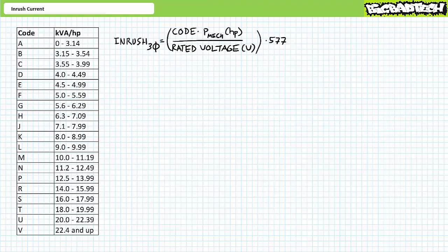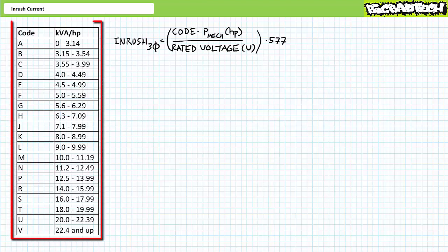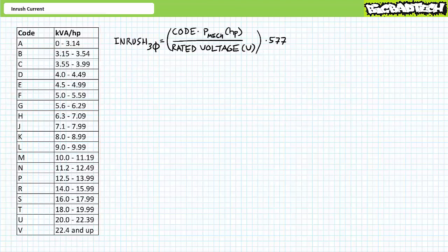Recall in the motor nameplates lecture available at the Big Bad Tech channel, we briefly examined some of the locked rotor code entries on the motor nameplate. The locked rotor code, sometimes called the kilovolt ampere per horsepower constant, is a letter that represents a range of numerical values. These numerical values, along with power and voltage data, are then entered into a formula to calculate the anticipated inrush.